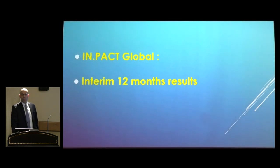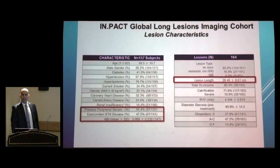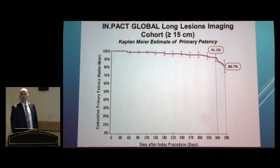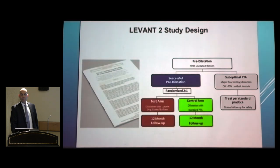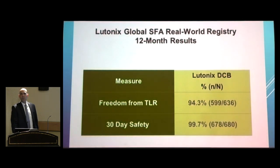After FDA approval, the IMPACT Global Registry followed up at 12 months in real-life experience and showed the same results. The IMPACT trial enrolled 300 patients, while the IMPACT Global Registry enrolled over 15,000 patients. Even in different lesion lengths, the DCB proved effective in the SFA. For long lesions greater than 15 centimeters, patency was approximately 80% over one year. The Levant II study, the Biotronik trial, is another FDA-approved balloon showing the same results regarding pre-dilatation and post-dilatation.